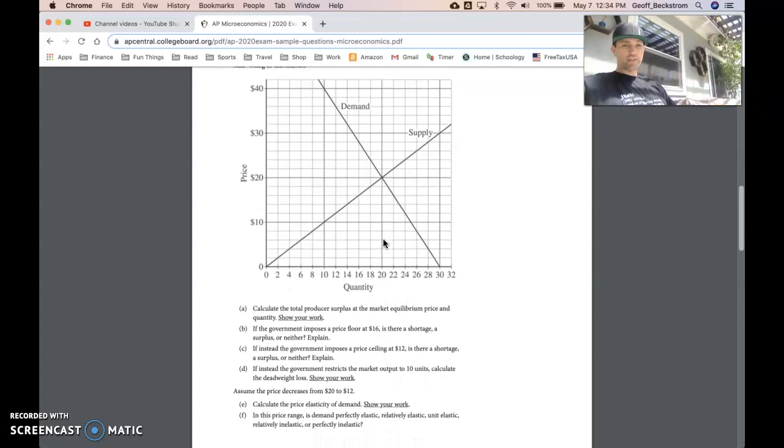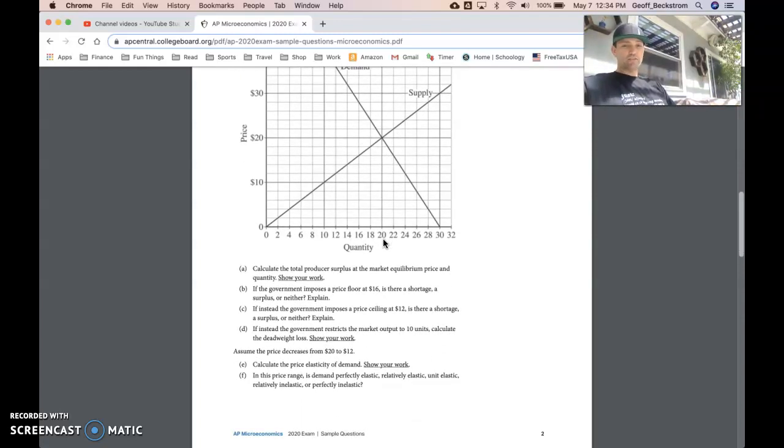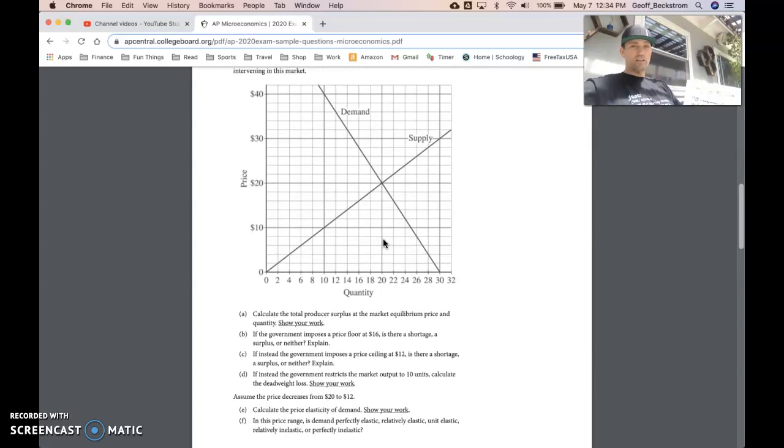For part B, if the government imposes a price floor at 16, is there a shortage, a surplus, or neither? A little bit of a trick question here on part B. A price floor at 16, this line right here, would mean that the price is unable to go below that, but the invisible hand of the market doesn't want the price to go below that anyways. So that would have no effect, and the explanation should be something to the extent that an effective price floor needs to be above the natural equilibrium price. In this case, it's below, so it's an ineffective price floor.